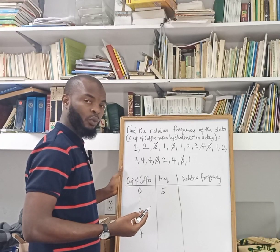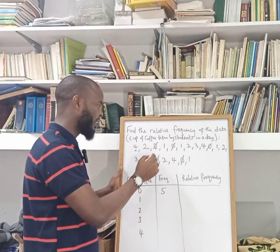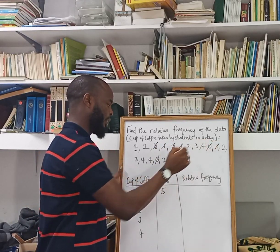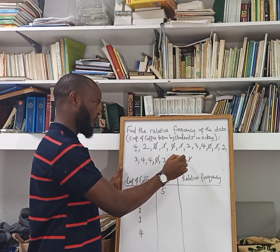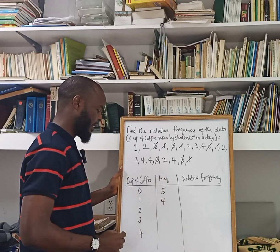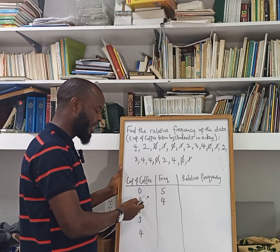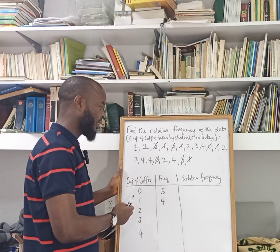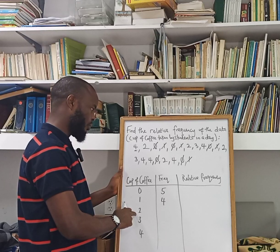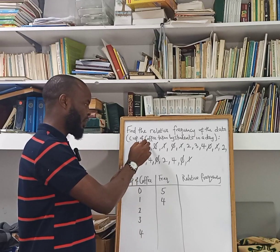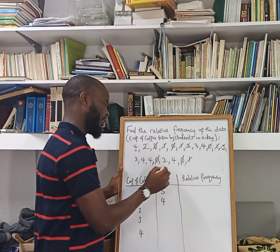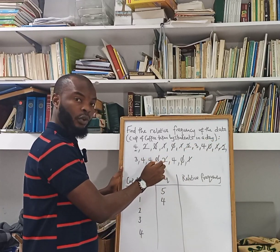How many ones do we have? Counting together: one, two, three, four. We are having four — that shows four students take coffee only once. How many students take coffee twice? Counting: one, two, three, four. So we are having four for twos as well.